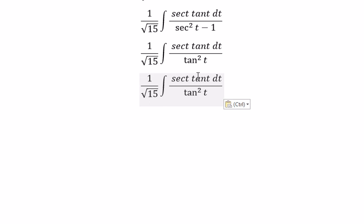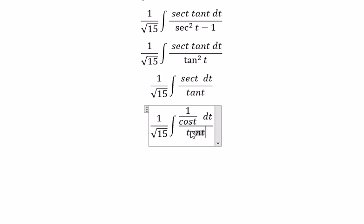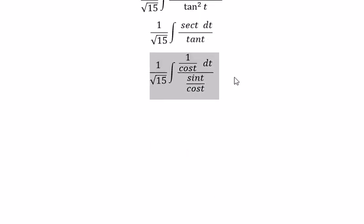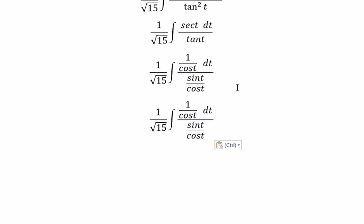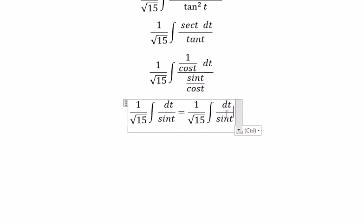Next, secant t equals 1 over cosine t, and similarly for this term, we have cosine t. These simplify, and we get cosecant t dt.